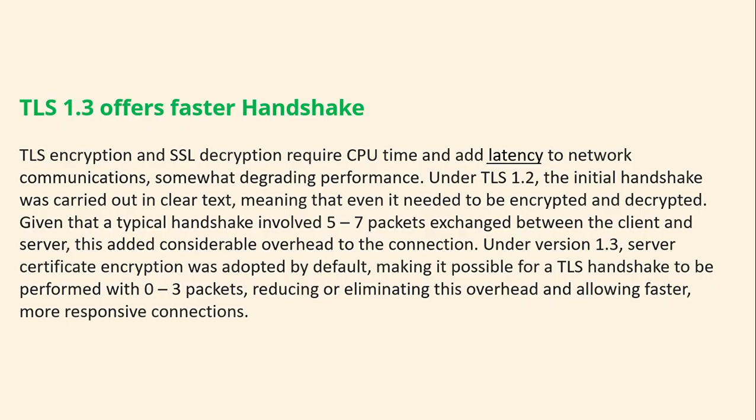TLS 1.3 offers a faster handshake. TLS encryption and SSL decryption require CPU time and add latency to network communications. Under TLS 1.2, the initial handshake was carried out in clear text, and a typical handshake involves 5 to 7 packets exchanged between the client and the server, adding considerable overhead. Under TLS 1.3, server certificate encryption is adopted by default, making it possible for the TLS handshake to be performed with only 0 to 3 packets, which reduces or eliminates the overhead and allows faster, more responsive connections.